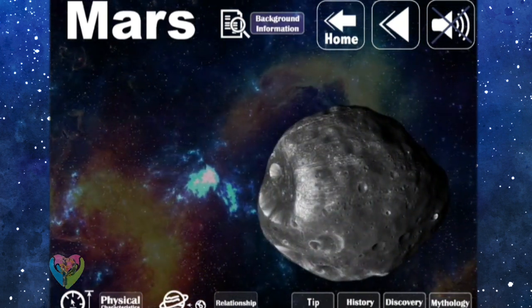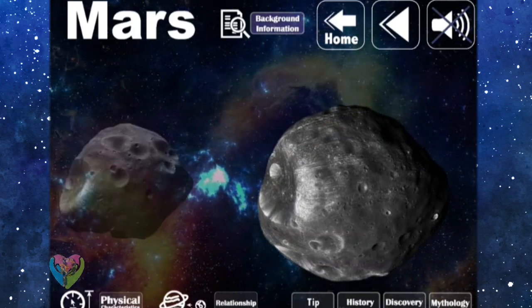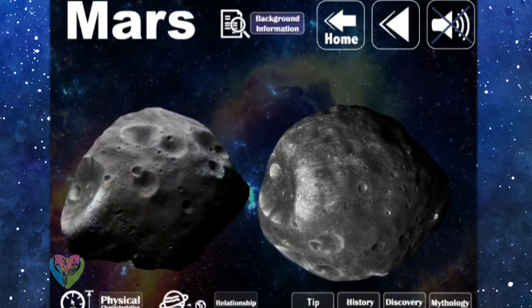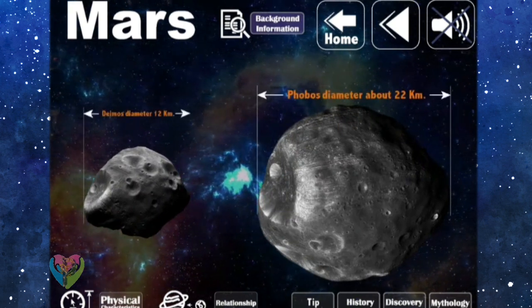Mars has two moons as the natural satellites, which are Phobos, with the diameter about 22 kilometers, and Deimos, with the diameter about 12 kilometers.